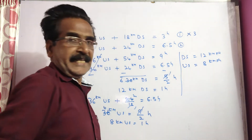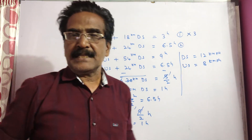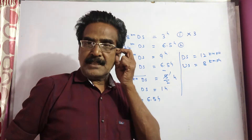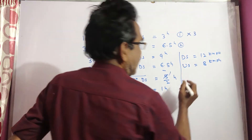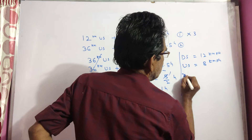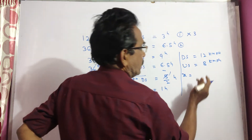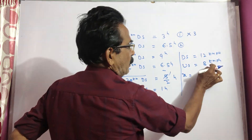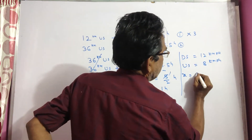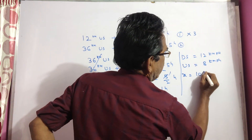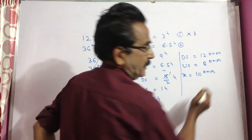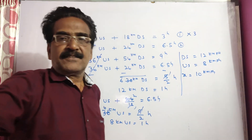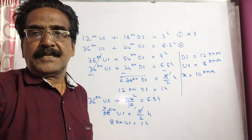Now we know ds and us. We want the speed of the boat, that is x. x is equal to ds plus us divided by 2, which is 12 plus 8 equals 20 by 2. So 10 kmph is your answer, friends. Thank you. Have a nice day. Bye.